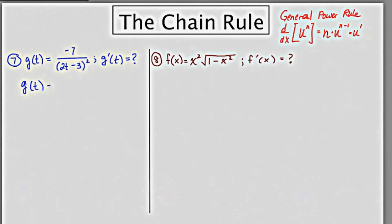g of t is equal to negative 7 times 2t minus 3 to the negative 2. Now as a reminder, I've written the general power rule right up here in the corner. So if you need to refer to it, you can.